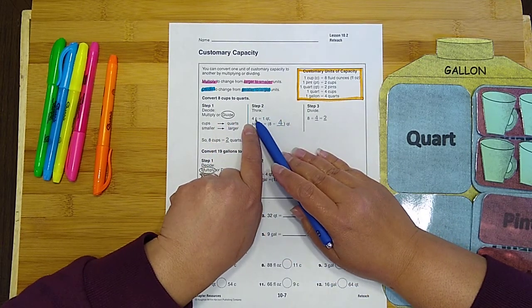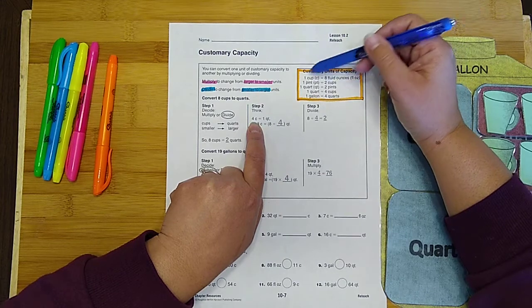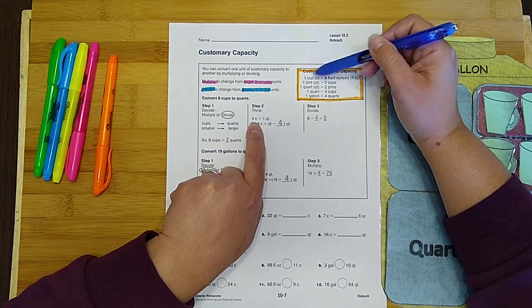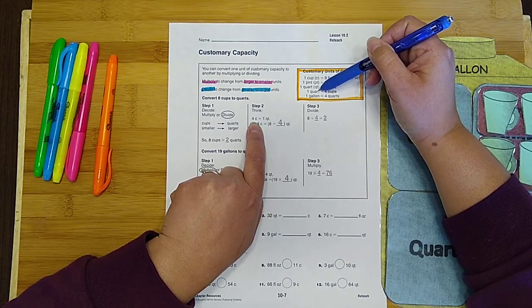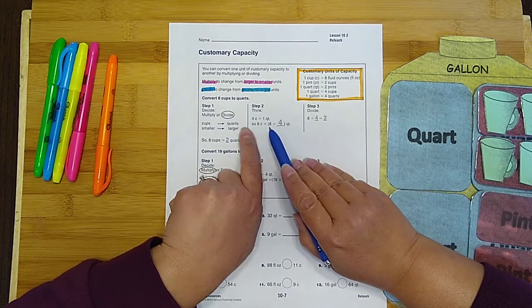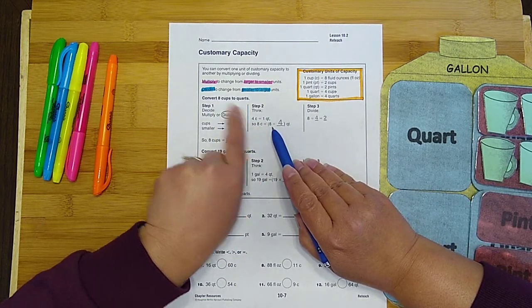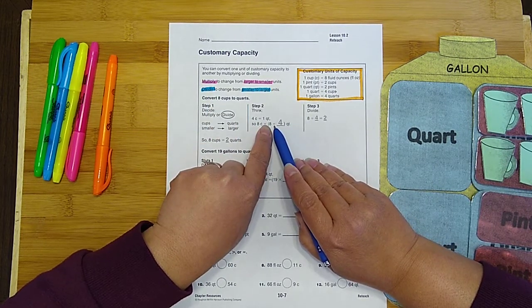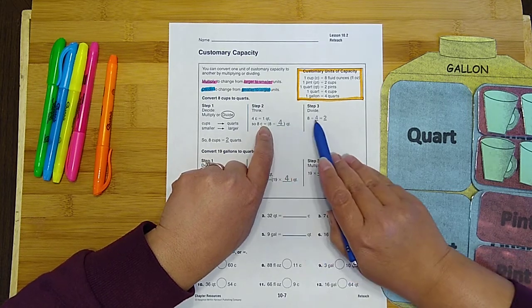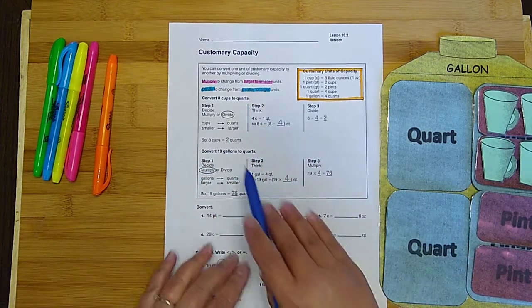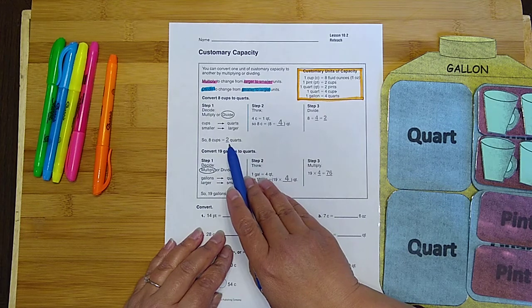So think, if there's four cups in one quart, which in that information you can find over here in our chart, there's four cups to one quart. That means you would do 8 right there. That 8 comes down here divided by 4. 8 divided by 4 is 2. So 8 cups is equal to 2 quarts.